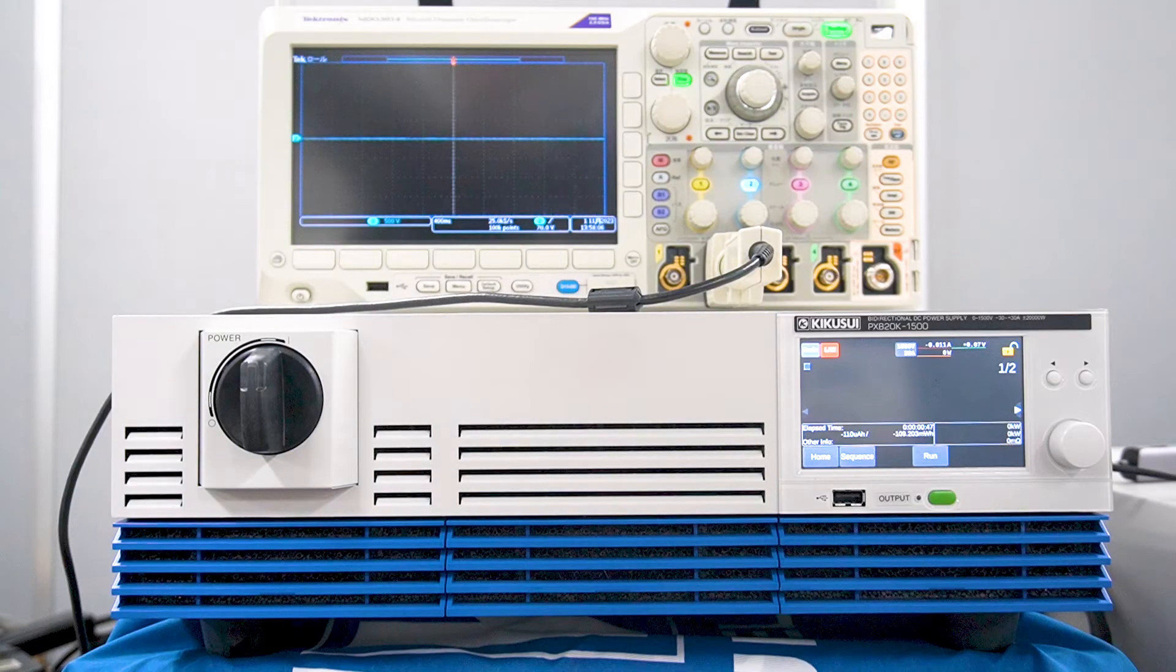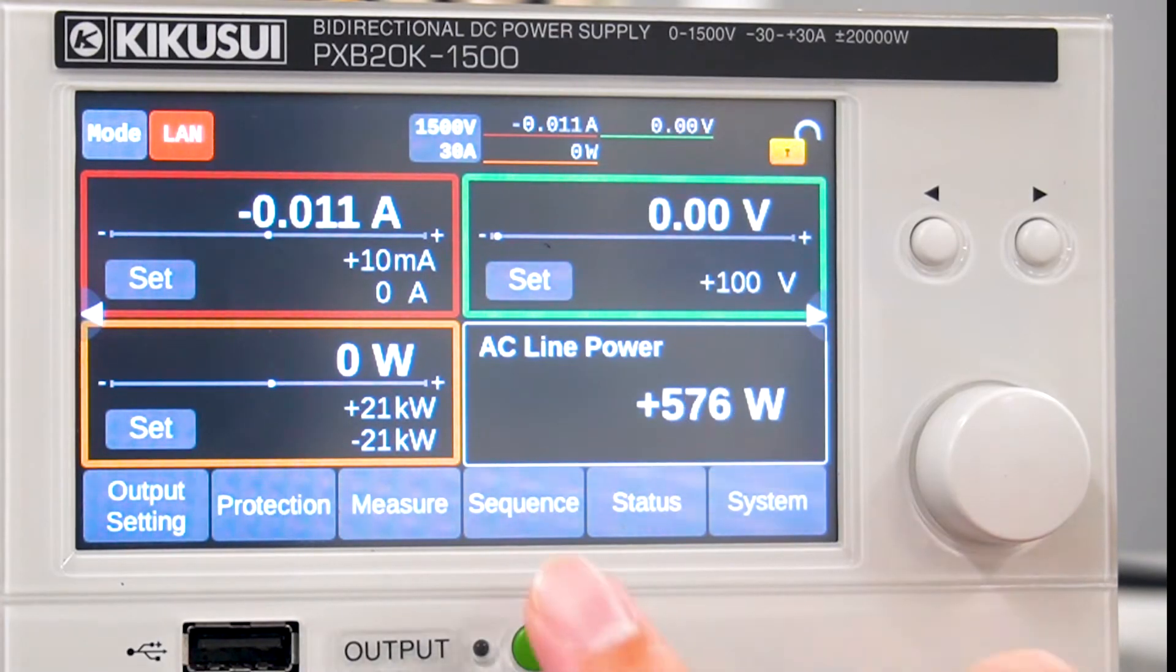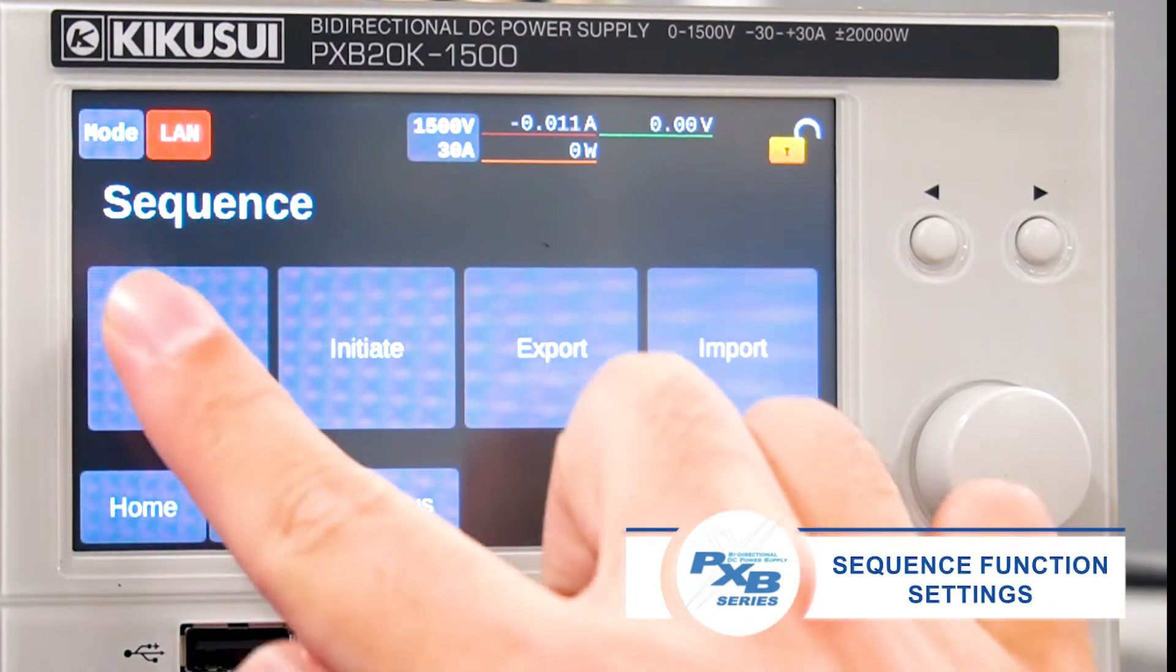Now, let's talk about the sequence function settings. First, we'll create a program. On the home screen, press sequence, then select edit.